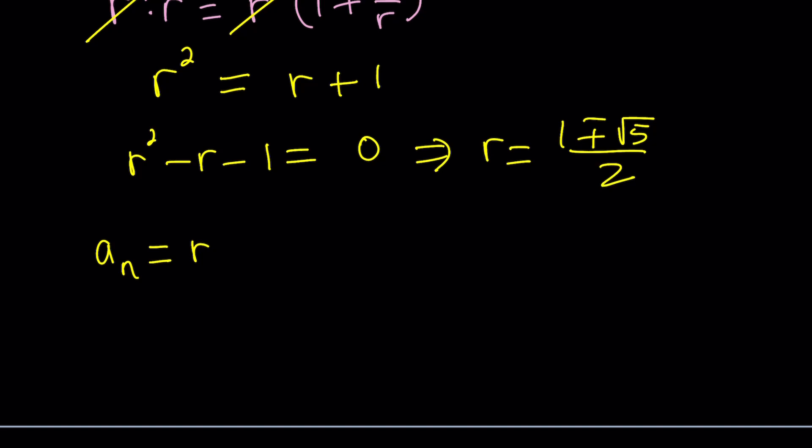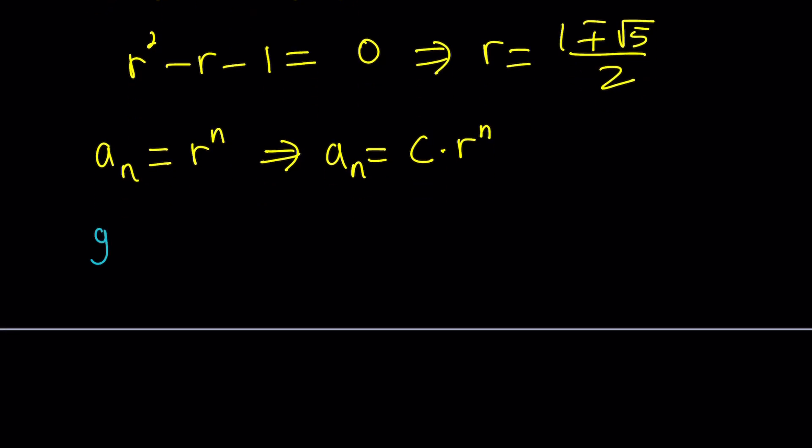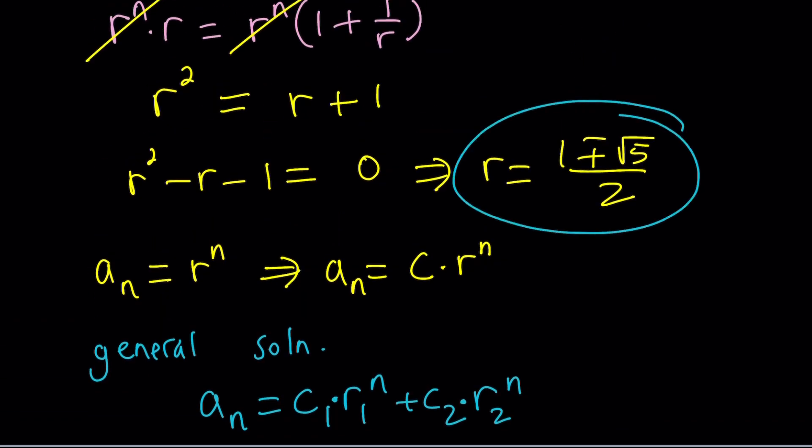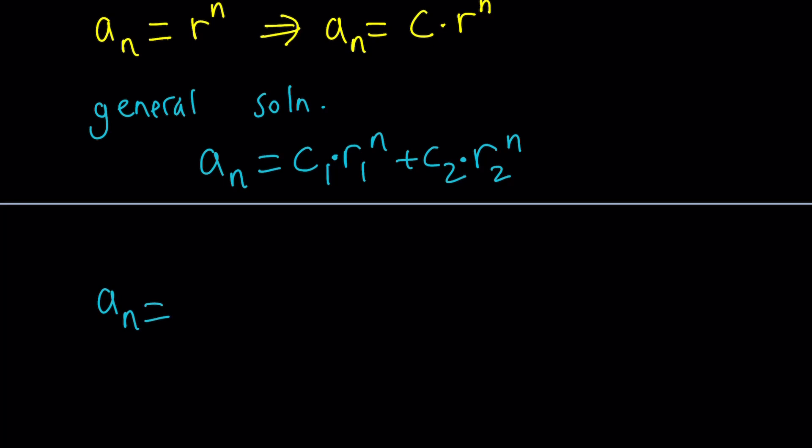Now, since a sub n equals r to the n is a solution, then c times, like a constant times that, is also a solution. And the general solution actually can be written as follows, because there are two solutions. So we can write the general solution as a linear combination of the two solutions. a n would be a constant times r1 to the n, and another constant times r2 to the n. But since we know the values of r1 and r2, we can go ahead and write the general term as c1 times 1 plus root 5 over 2 to the power n plus c2 times 1 minus root 5 over 2 to the power n.